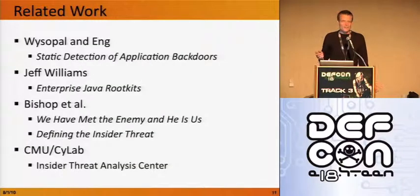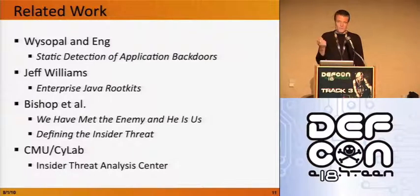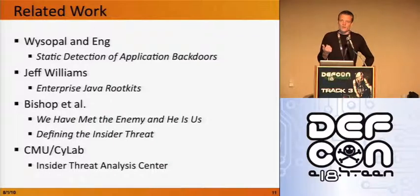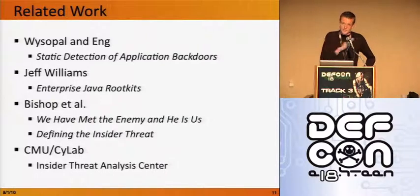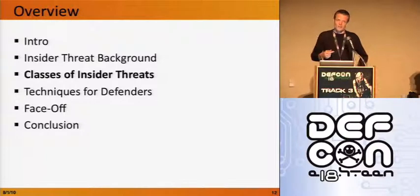We acknowledge some related work. Weisopel and Eng published a paper about using static analysis on binaries to detect backdoors and other insider threats. Jeff Williams has done work in this area. Matt Bishop at UC Davis is providing academic underpinning — formal definitions for what we mean by an insider and a threat in that context. And at CMU there's a research group called Scilab doing work on the insider threat problem more broadly, with some focus on developers and code-level insiders.